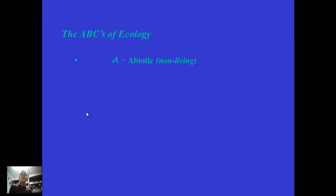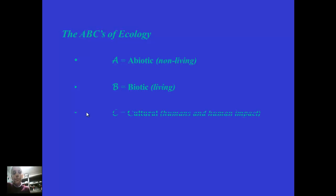The ABCs of ecology: A is for abiotic, which are all the non-living aspects of our ecosystem — things like rocks, mud, and water. B stands for all of the biotic, or living, parts of the ecosystem — the organisms I just showed you pictures of. And C stands for cultural — humans and the impact that we have on the ecosystem, which we'll be learning about throughout this unit.